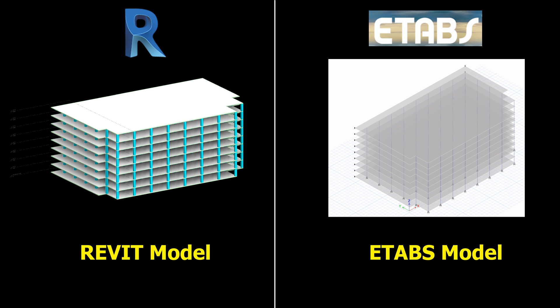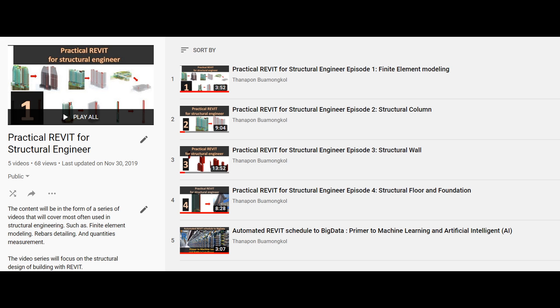You can either create the structural model in ETABS directly, or by making the Revit model and then transferring it to ETABS. In practice, I would recommend making a Revit model for higher efficiency in geometry control, drawing packages, and much more. For those not familiar with transforming a Revit model to an ETABS model, please refer to the video series linked in the description below.